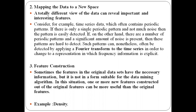So in mapping data to a new space, we convert data from one form to another so that we can find interesting and important features. The Fourier transform is one example: it maps time series data to a new space so periodic patterns can be found easily.